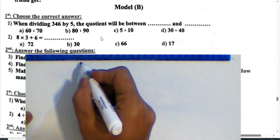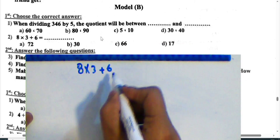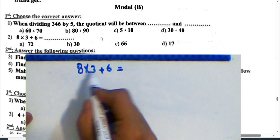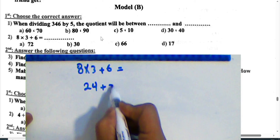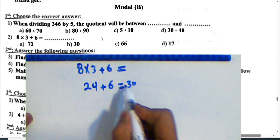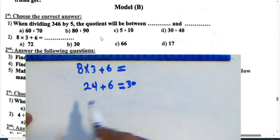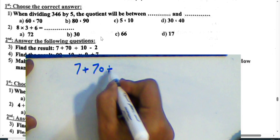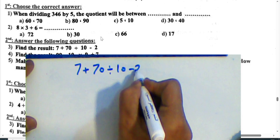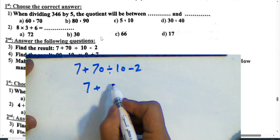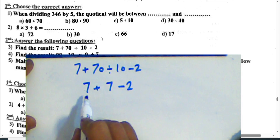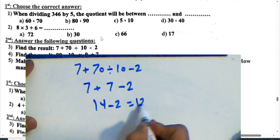Next question: Find the result of 3 times 8 plus 6. Multiplication first: 3 times 8 is 24, then 24 plus 6 equals 30. Next question: Find the result of 7 plus 70 divided by 10 minus 2. Division first: 70 divided by 10 equals 7; then 7 plus 7 equals 14; 14 minus 2 equals 12.